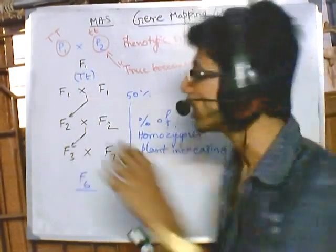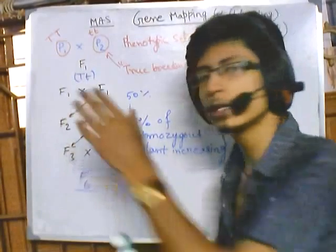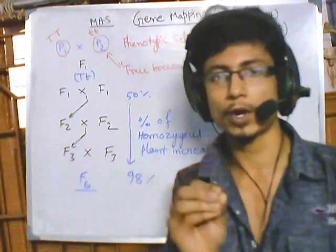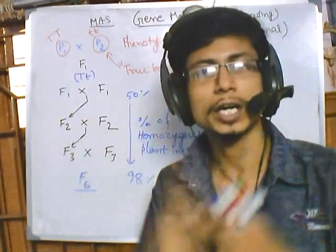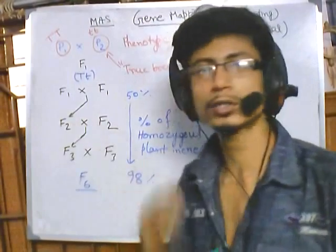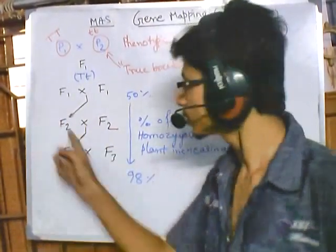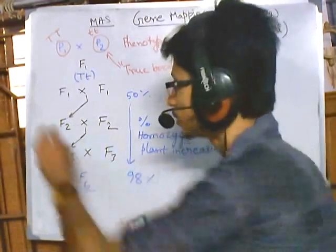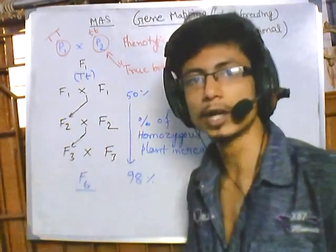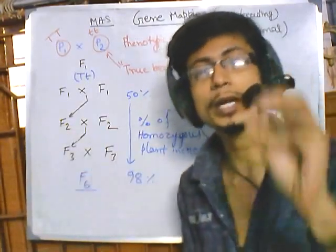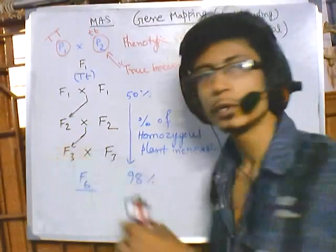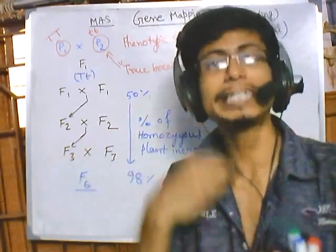After the F1 and F2 cross, we have many different types of plants. Among those, we look for phenotypic expressions — for example, plants that are drought tolerant or producing superior quality seeds. We select those plants and discard others. In F3, we again select plants based on our needs.